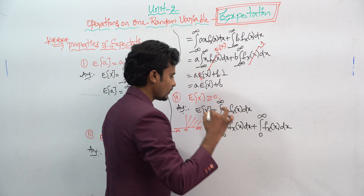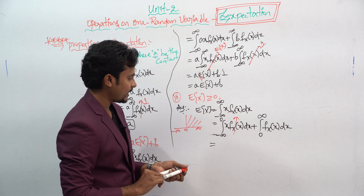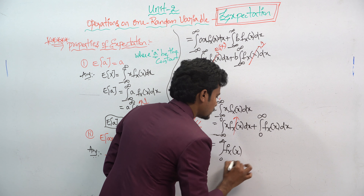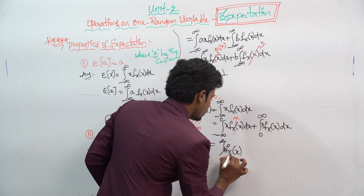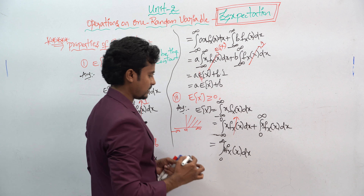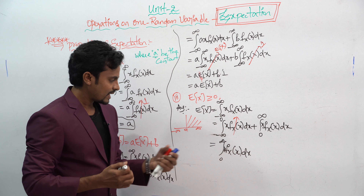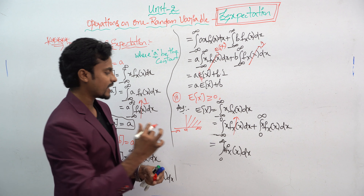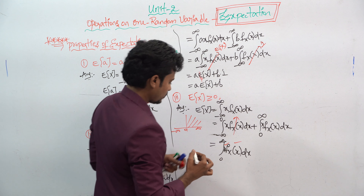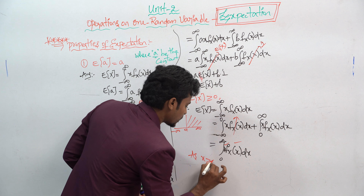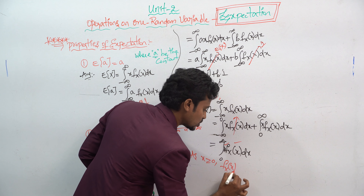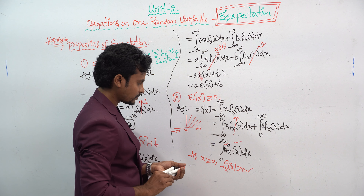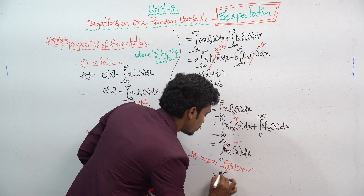If you take a plot, the interval goes from minus infinity to 0 and 0 to infinity. Our target is the 0 to infinity region. The minus infinity to 0 case is not our criterion, so it is neglected. What remains is the integration from 0 to infinity of x times f(x) dx.